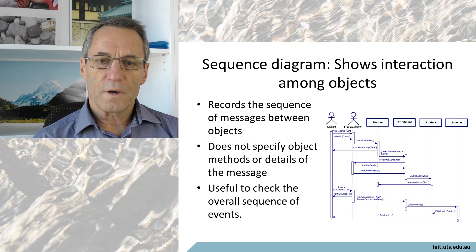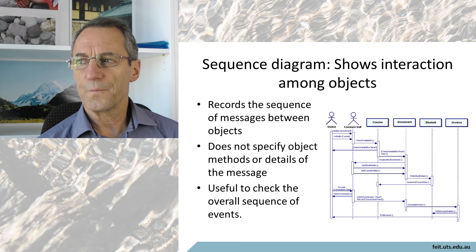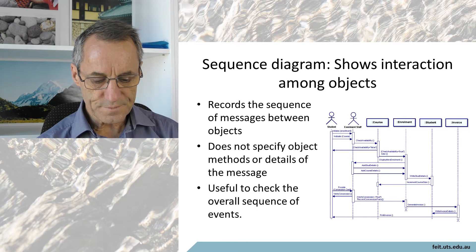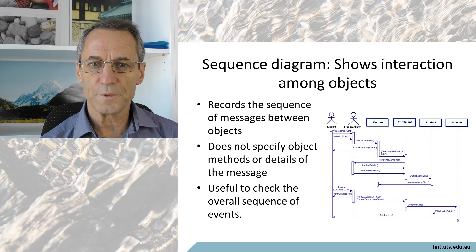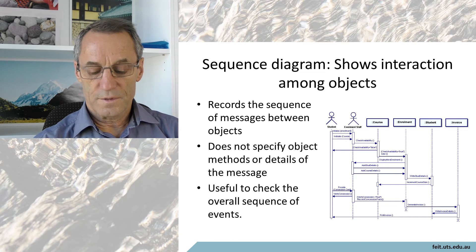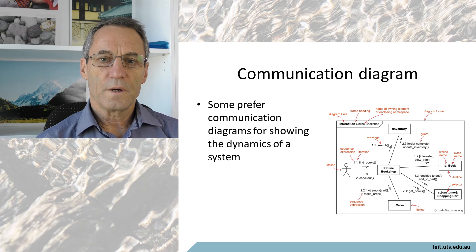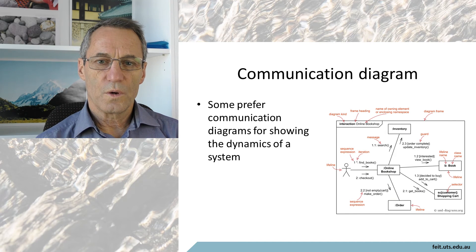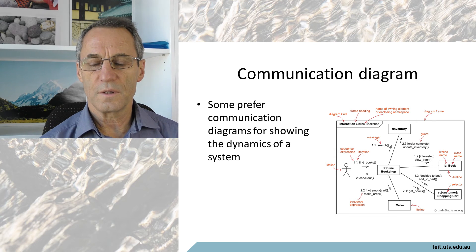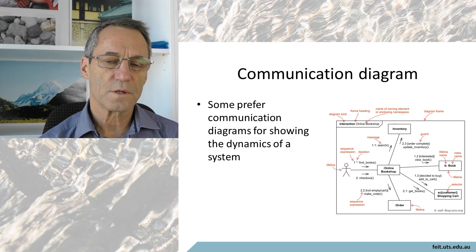Next we have the sequence diagram. This shows the sequence of messages between objects — it shows the dynamics of the system. It's not alone in that sense, because we also have the communications diagram. The communications diagram shows which classes participate in any particular transaction or message sequence, but it doesn't show quite the detail of precisely the message-passing sequence that a sequence diagram does.